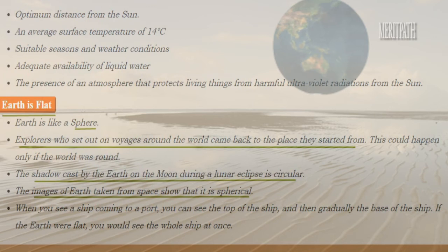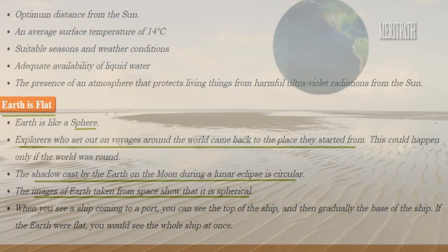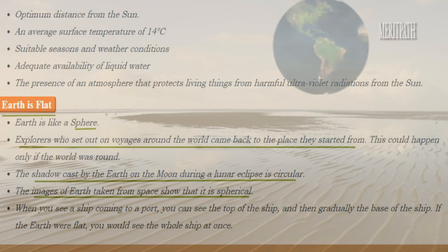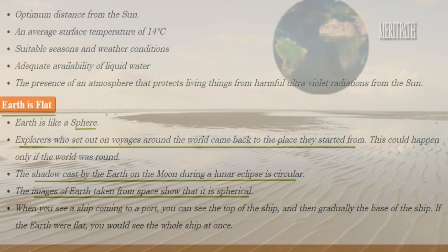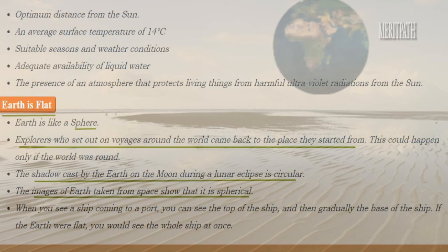Evidence that Earth is not flat but spherical: Explorers who set out on voyages around the world came back to the place from where they started — this could only happen if the world was round. The shadow cast by the Earth on the moon during a lunar eclipse is always circular in shape. Images of the Earth taken from space show that the Earth is spherical. When we see a ship coming to a port, we can see only the top part first, and then gradually the base — if Earth was flat, we could see the whole ship at once.